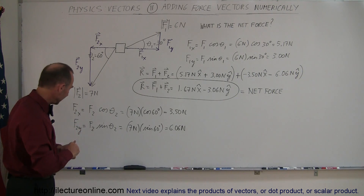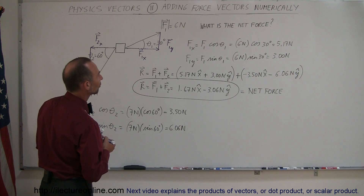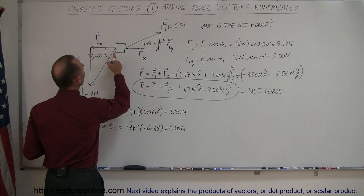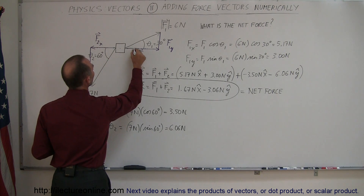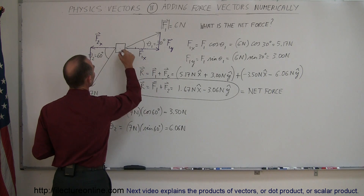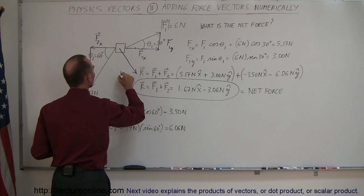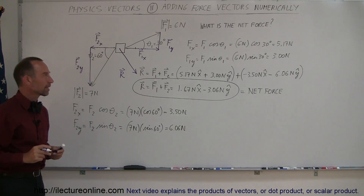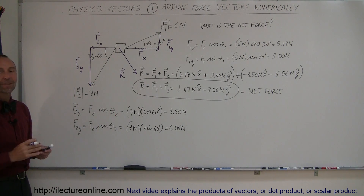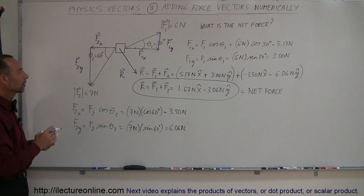If I were to draw that, you can see 1.67 Newtons in the X direction and a negative Y component, so the resultant vector points to the right and downward. That's how you add two force vectors together and get a numerical answer.